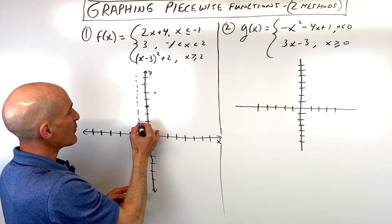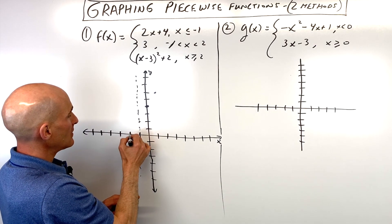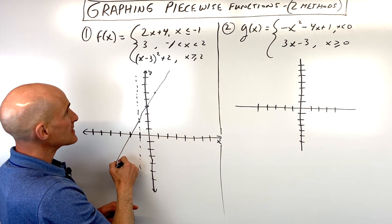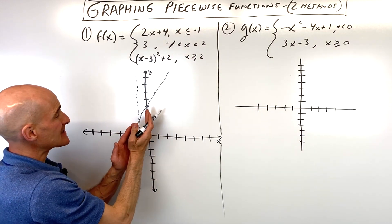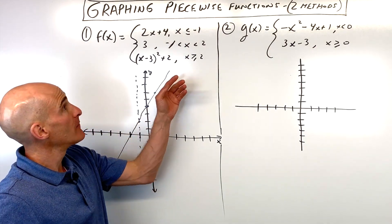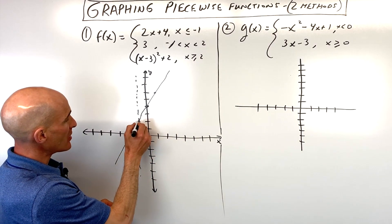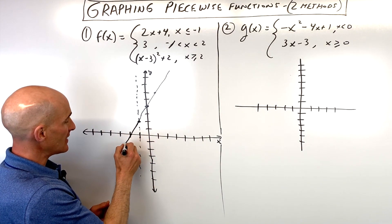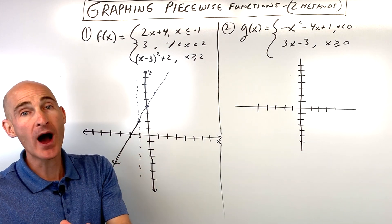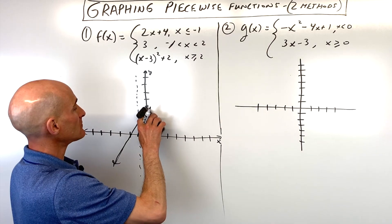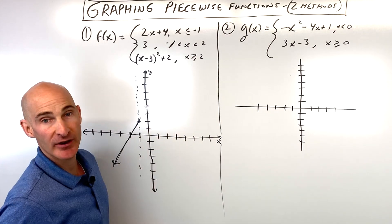Okay, and you can repeat that process and you can get your line like this. But we only want the part that's less than, meaning to the left of negative 1 or equal to negative 1. So that means that this part here at negative 1 or to the left, that's the part of the graph that we want. So the other part of the graph, I'm just going to go back and erase because we don't actually need that.